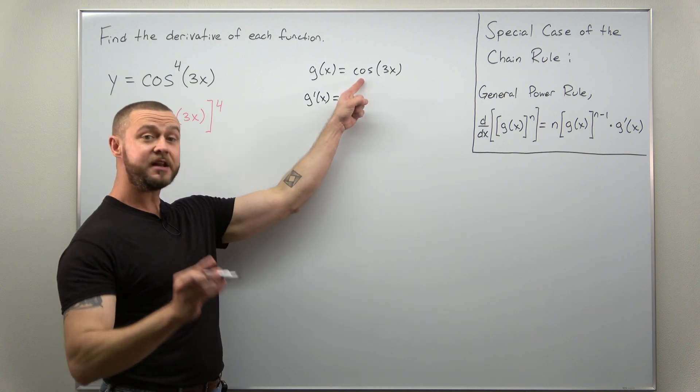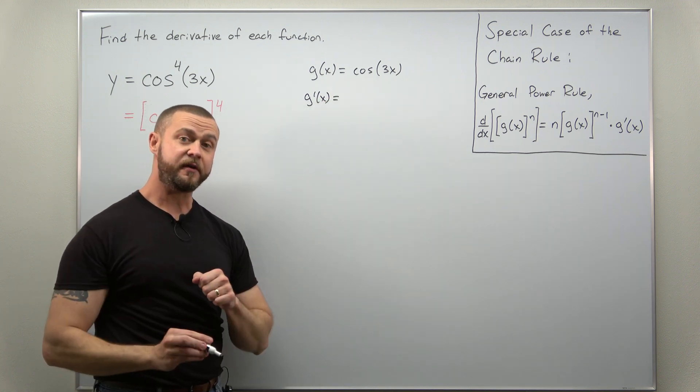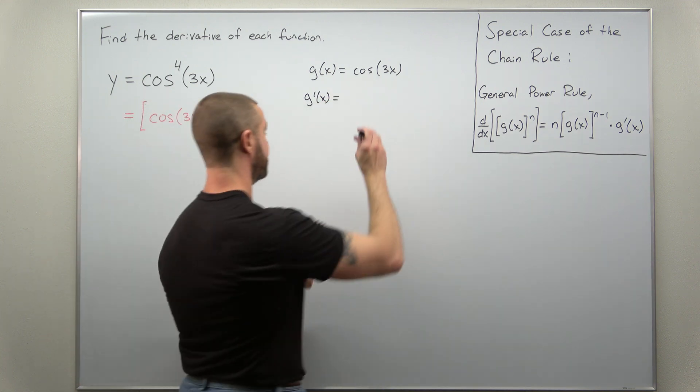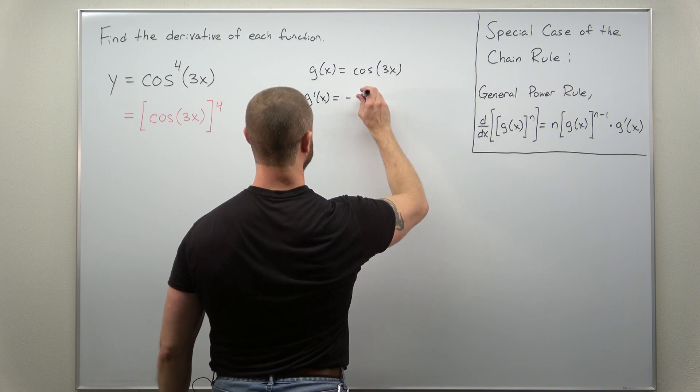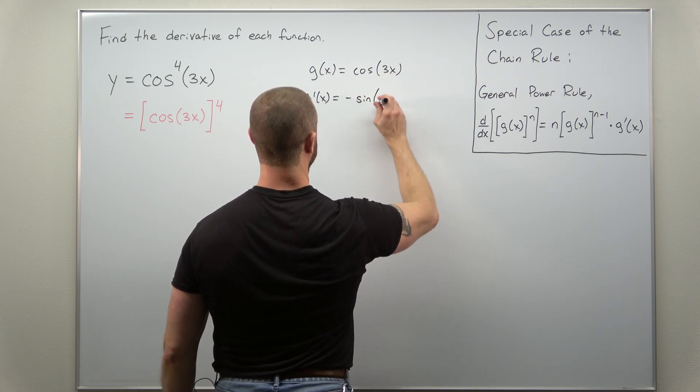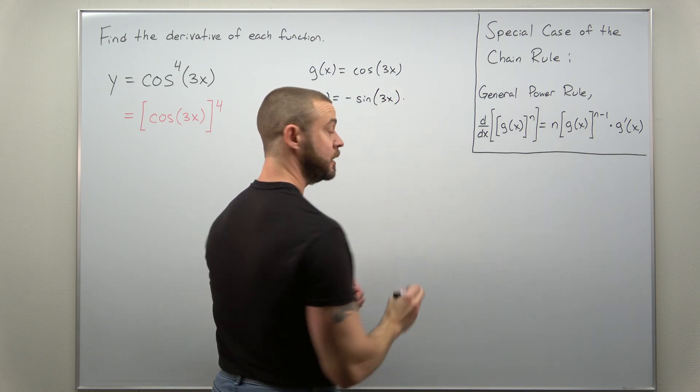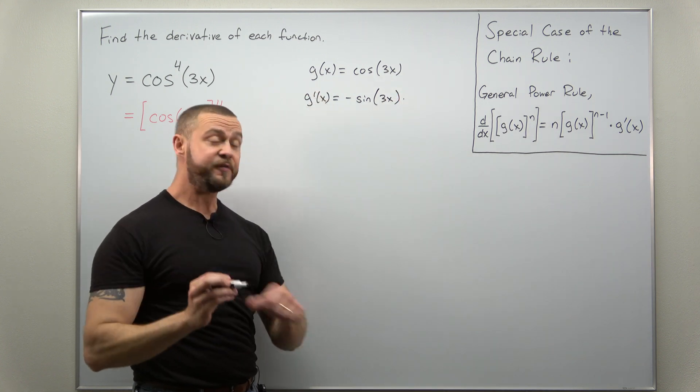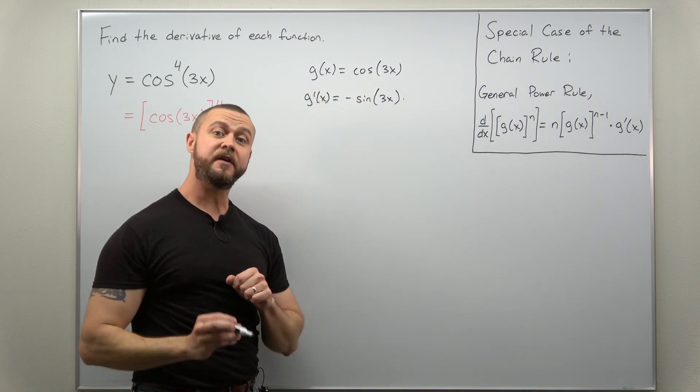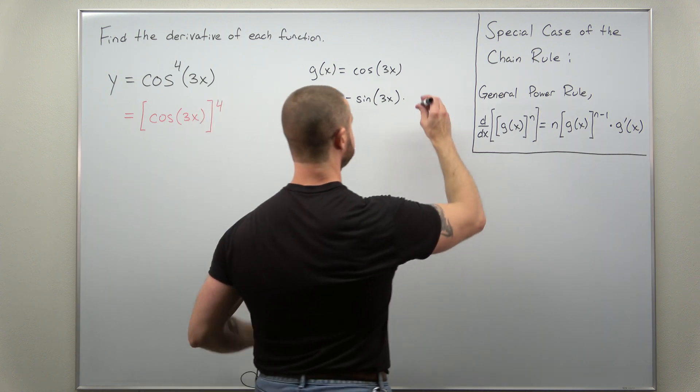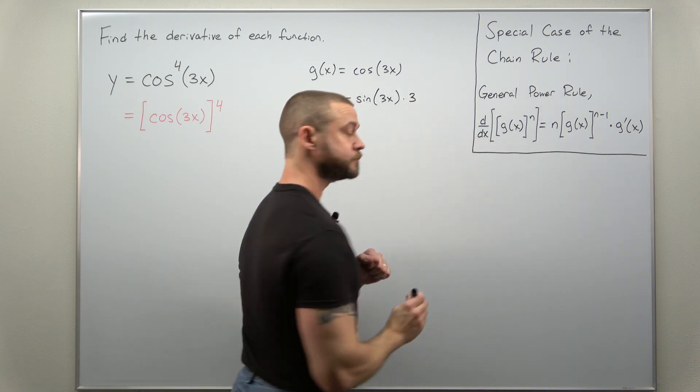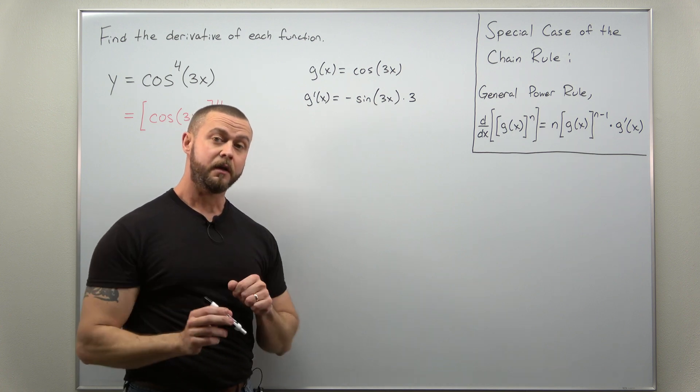We're going to start by differentiating the outer function. The derivative of cosine is negative sine. So we get negative sine of the inner function 3x. And then we multiply by the derivative of the inner function. The derivative of 3x is 3.